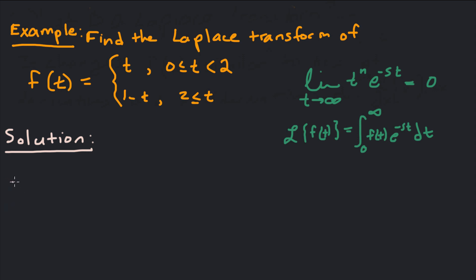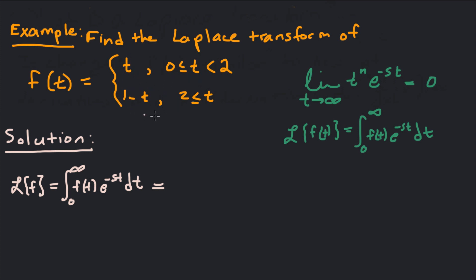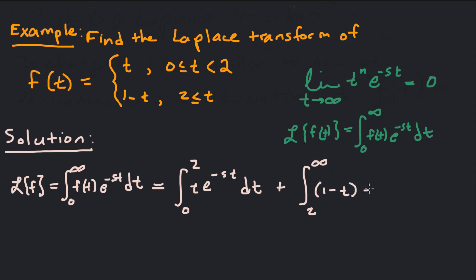Starting with the definition, the Laplace transform of f equals the integral from 0 to infinity of f of t times e to the negative st dt. Now here's the difference with piecewise functions — I have a different piece depending on where t is. So we split this integral up: from 0 to 2 we use t times e to the negative st dt, plus the integral from 2 to infinity of 1 minus t times e to the negative st dt.